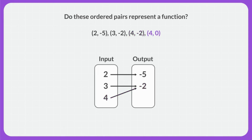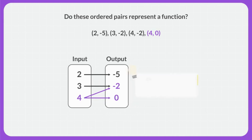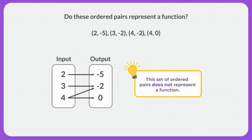Next, there's another input of 4 and an output of 0. That's a problem. Because now the input of 4 has an output of negative 2 and an output of 0, so this input has two different outputs. In a function, an input can only have one output. So this set of ordered pairs does not represent a function.